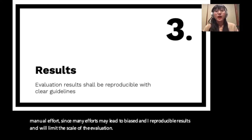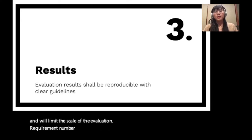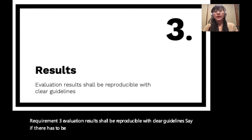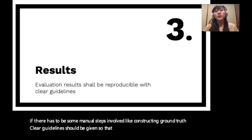Requirement number three, evaluation results shall be reproducible with clear guidelines. Say if there has to be some manual steps involved, like constructing ground truth, clear guidelines should be given so that other researchers can reproduce your results and build upon your work.